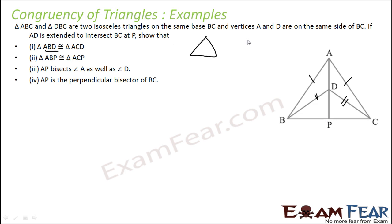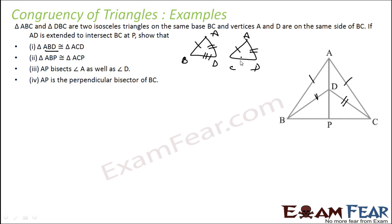Let's draw triangle ABD and ACD. AB is equal to AC, AD is equal to AD as a common side, and BD and CD are the same. So by SSS congruency, you can see that triangle ABD and ADC are congruent.